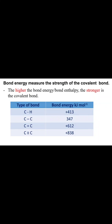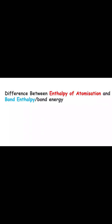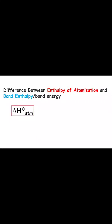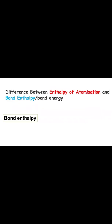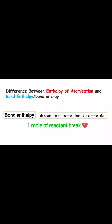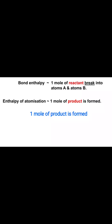As a conclusion, the key difference between enthalpy of atomization and bond enthalpy is that enthalpy of atomization describes the energy required to separate a molecule into its atoms, while bond enthalpy describes the dissociation of chemical bonds — it is the measure of the strength of a chemical bond. In simple terms: bond enthalpy refers to one mole of bonds broken, while standard enthalpy of atomization of an element refers to one mole of product formed.